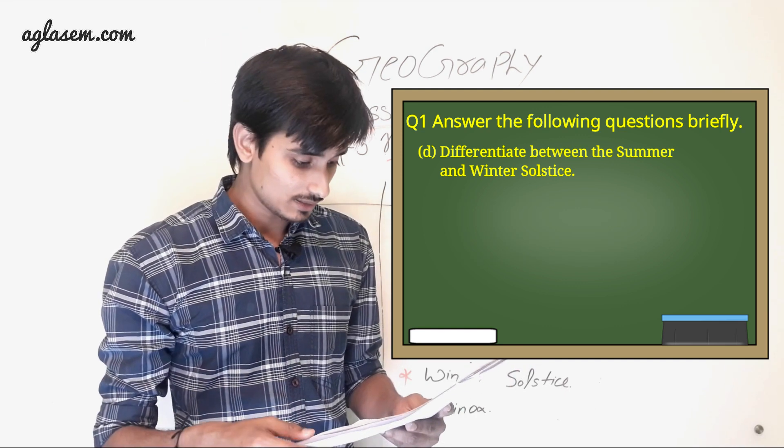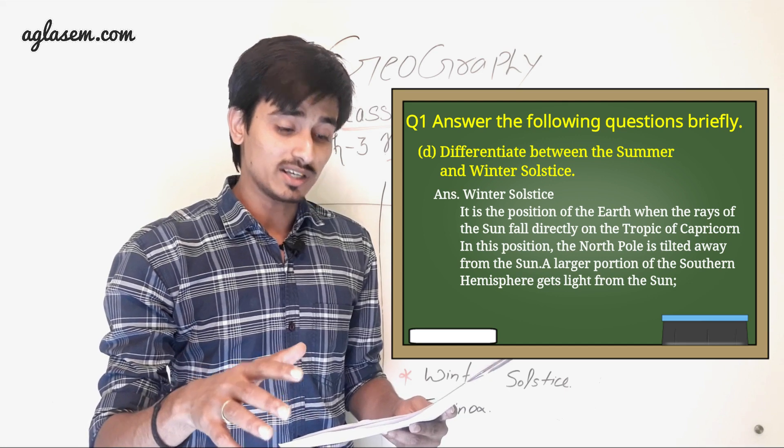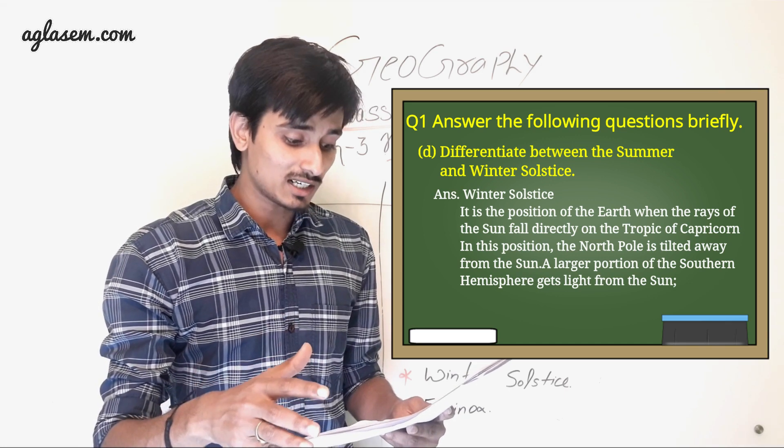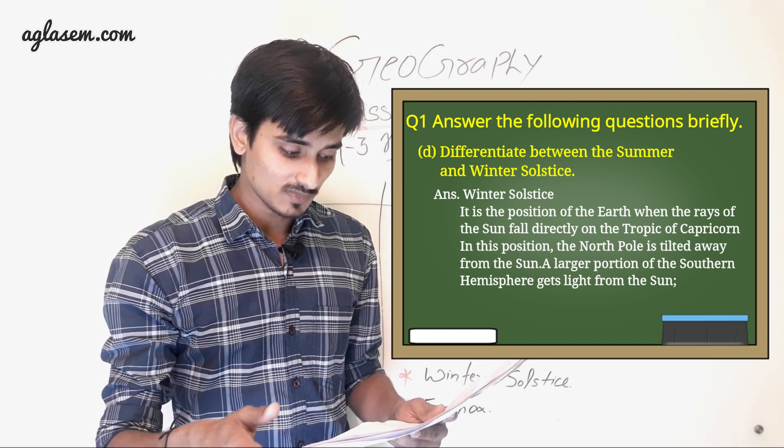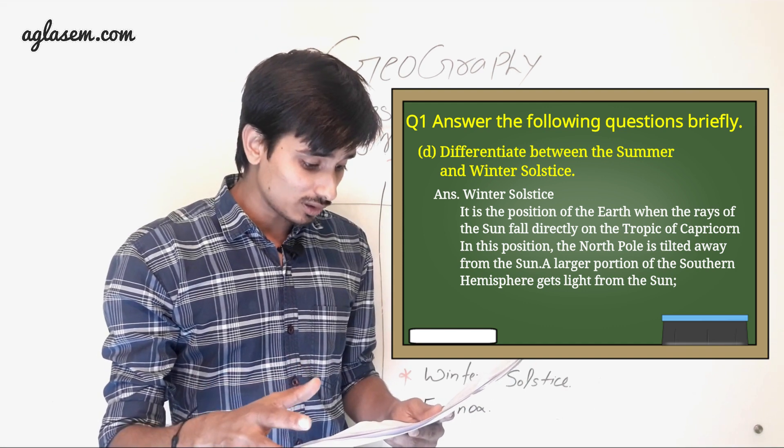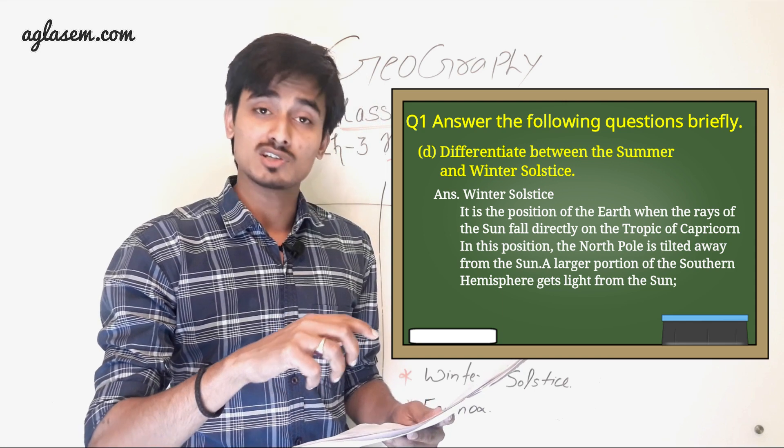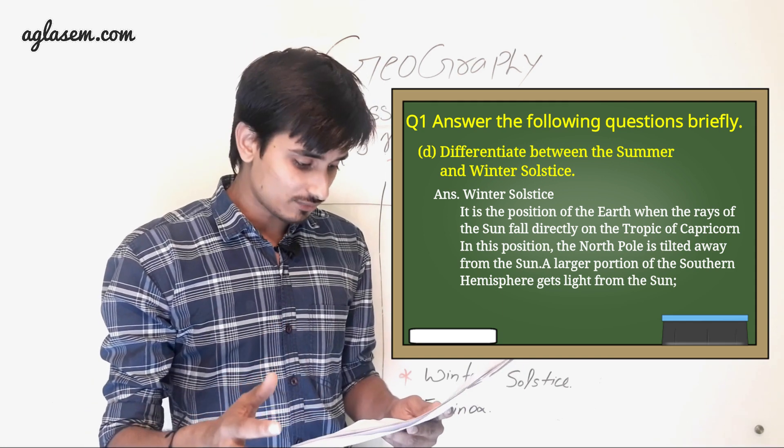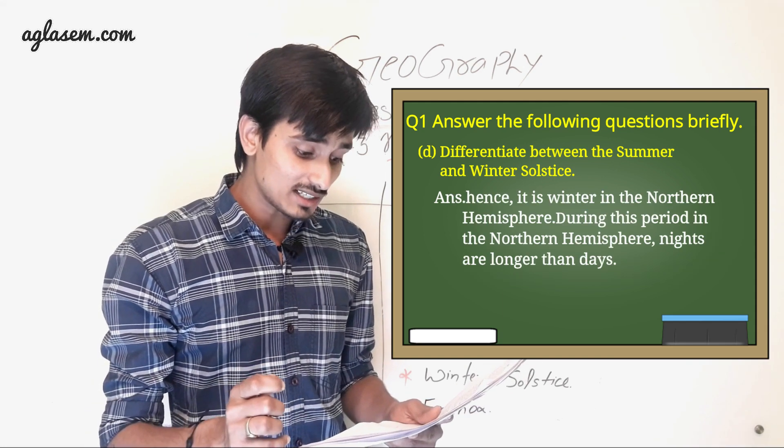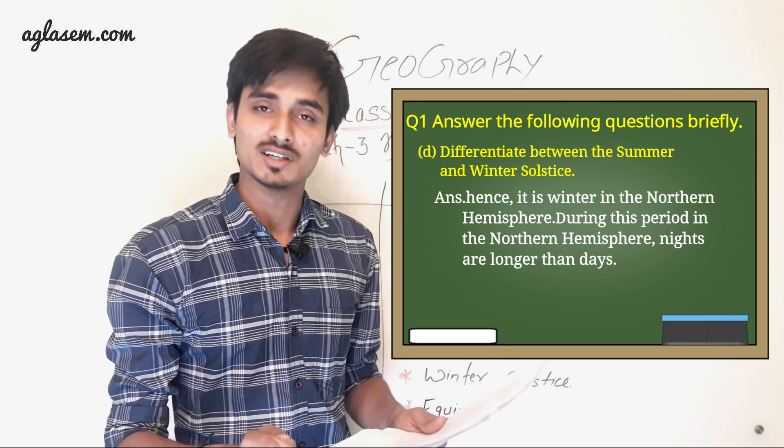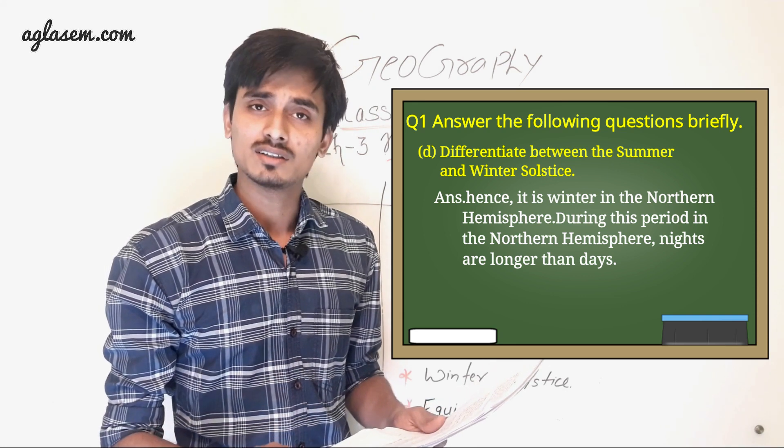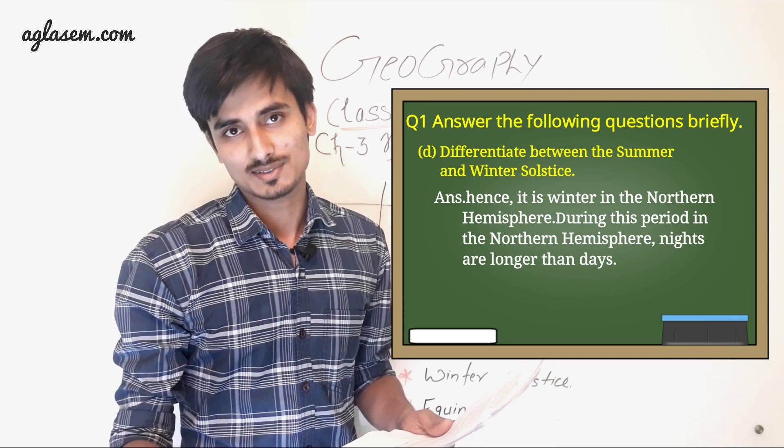Winter solstice. It is the position of the Earth when the rays of the Sun fall directly on Tropic of Capricorn. In this position, the North Pole is tilted away from the Sun. A larger portion of the Southern Hemisphere gets light from the Sun. Hence, it is winter in the Northern Hemisphere. During this period in the Northern Hemisphere, nights are longer than days.